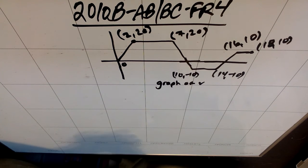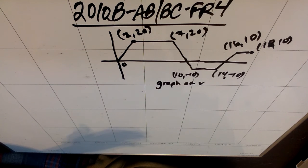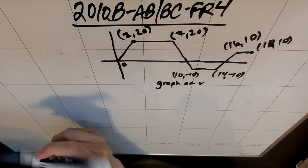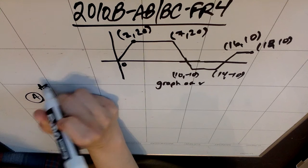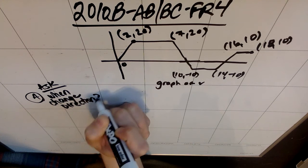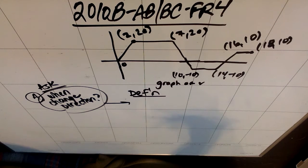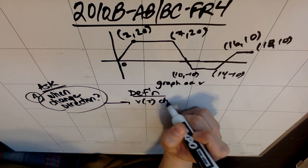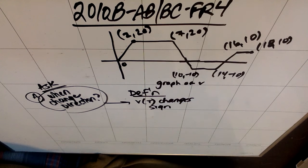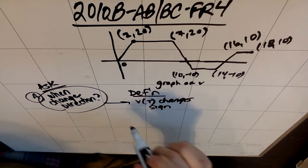Part A: at what times in the open interval from 0 to 18, if any, does the squirrel change direction? Give a reason for your answer. This entire squirrel problem is about translating from what you're asked to the mathematical definition to what you can see by visual observation. The definition of changing direction for a particle is that V of T changes sign — a positive V of T means moving toward building B, and a negative V of T means moving back toward building A.